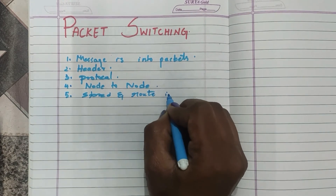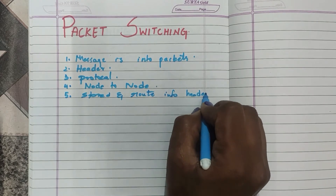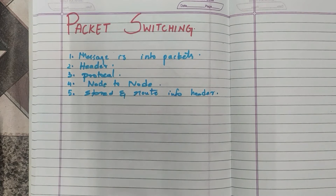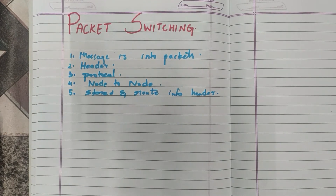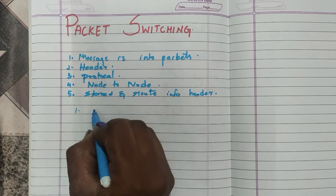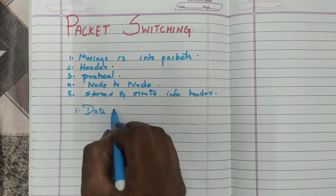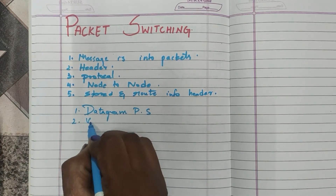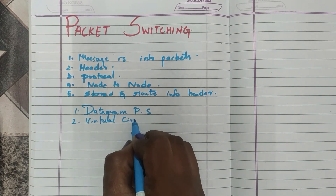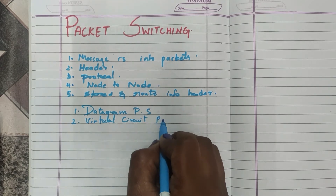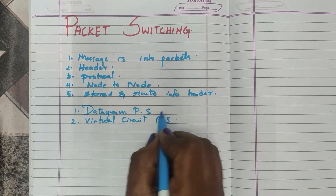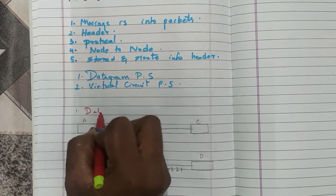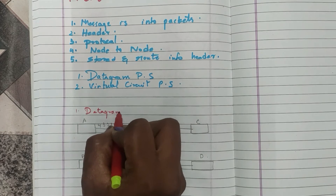This type of network is called a store-and-forward network. There are two types of packet switching: one is datagram packet switching and the other one is virtual circuit packet switching.